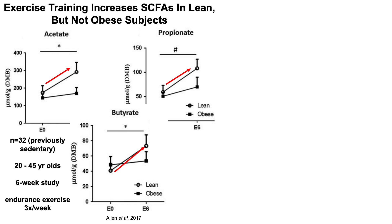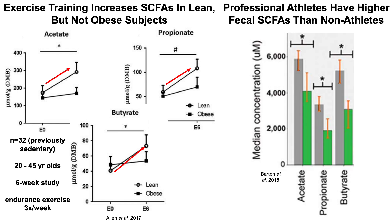These data on exercise training increasing short-chain fatty acids are supported by findings in professional athletes. Professional rugby players have higher levels of fecal short-chain fatty acids versus non-athletes, and we can see that for each of acetate, propionate, and butyrate — shown as gray bars for rugby players versus green bars for non-rugby players.